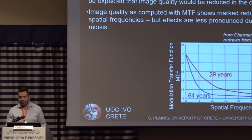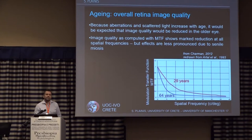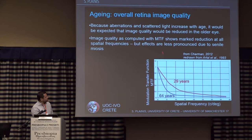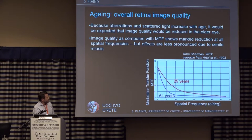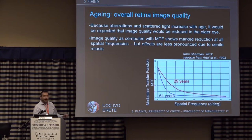What about retinal image quality with ageing? There is an increase in aberrations and scattered light, all of which affect image quality. This graph shows the modulation transfer function — a way to simulate retinal image quality as a function of spatial frequency — for a 29-year-old versus a 64-year-old subject. There is a decrease across all spatial frequencies, mainly at middle and high spatial frequencies for older subjects. Of course, as the pupil becomes smaller it may help by limiting aberrations and scatter, though this effect is not shown here as all data are for similar pupil sizes.